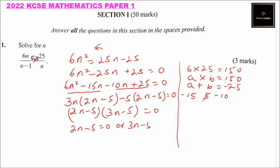So this will give us, it means that 2n minus 5 equals 0 or 3n minus 5 equals 0. So 2n equals 5 or 3n equals 5. Divide both sides by 2, n equals 5 divided by 2 which equals 2 and a half, or divide by 3, so n equals 5 over 3 which equals 1 and 2 over 3.